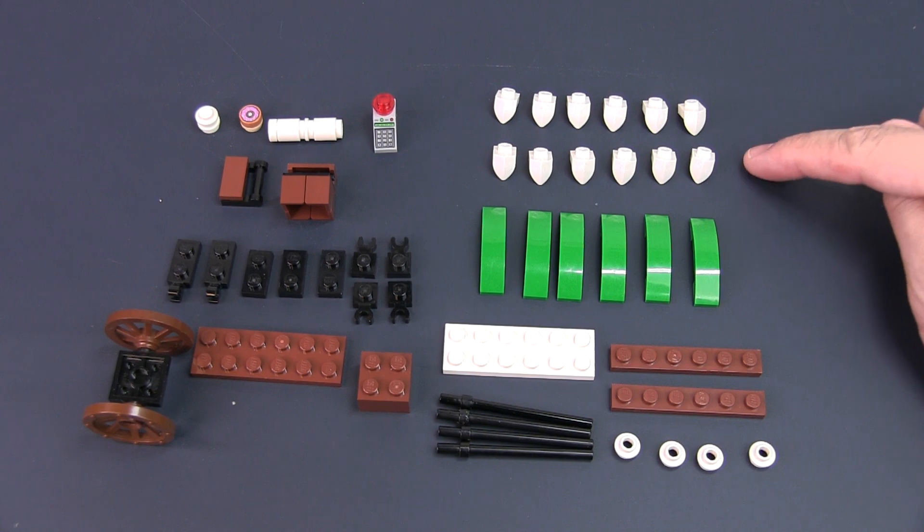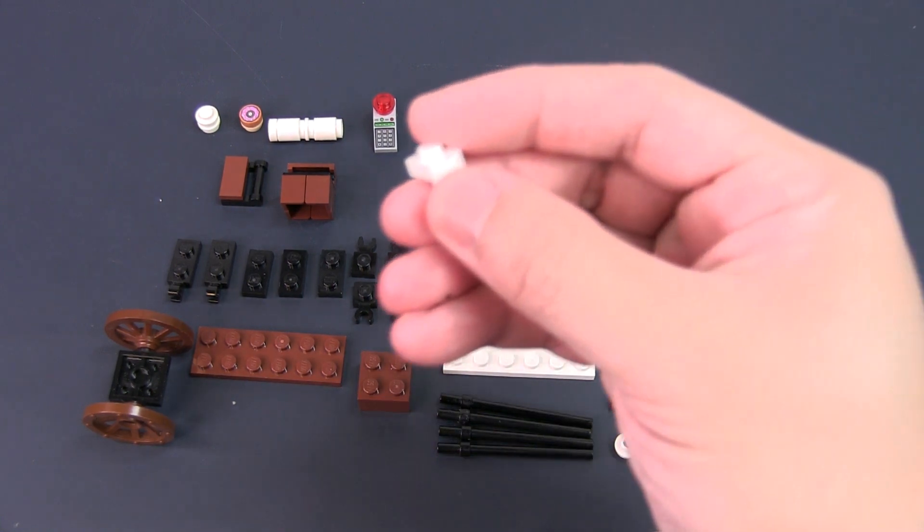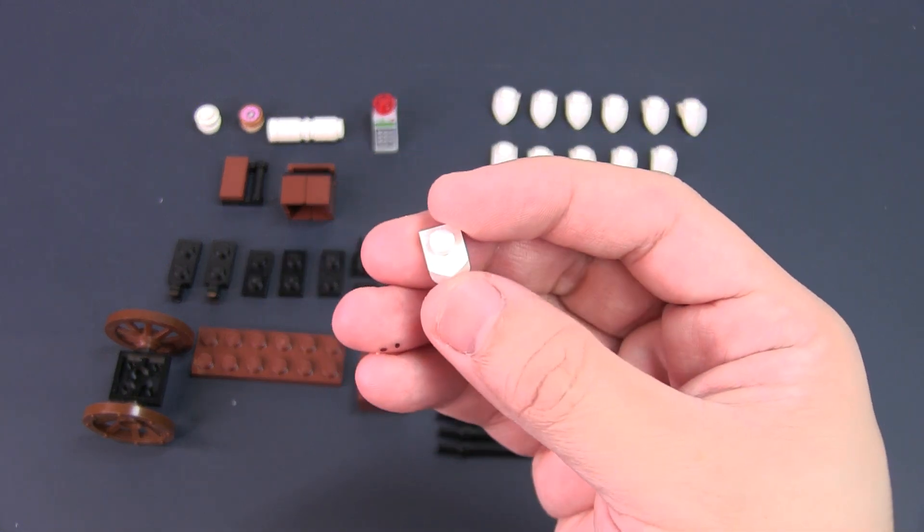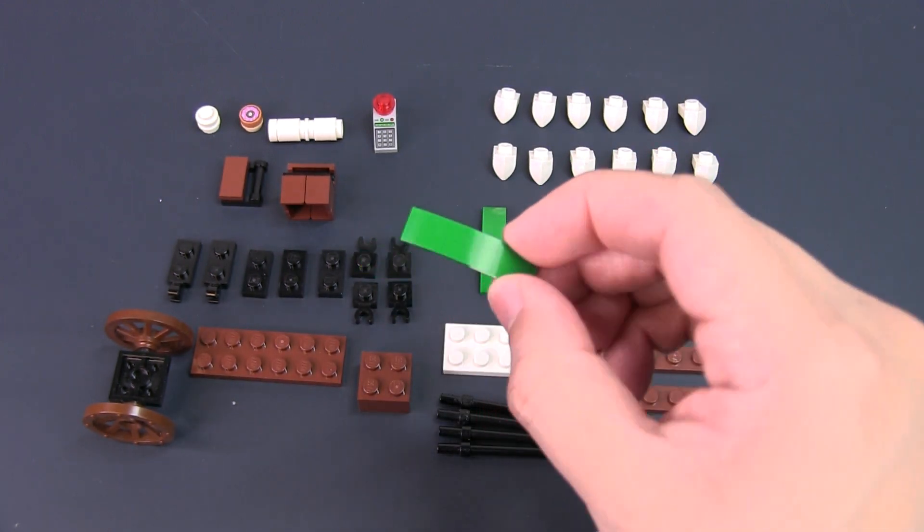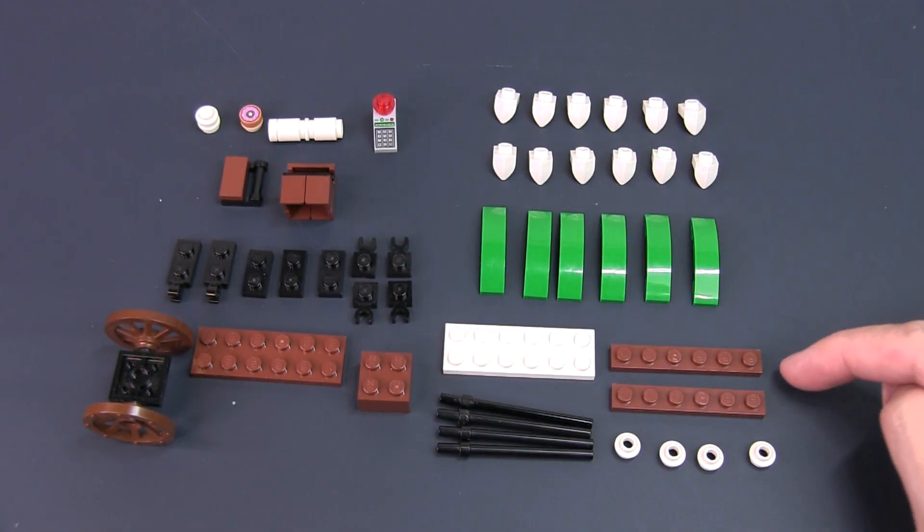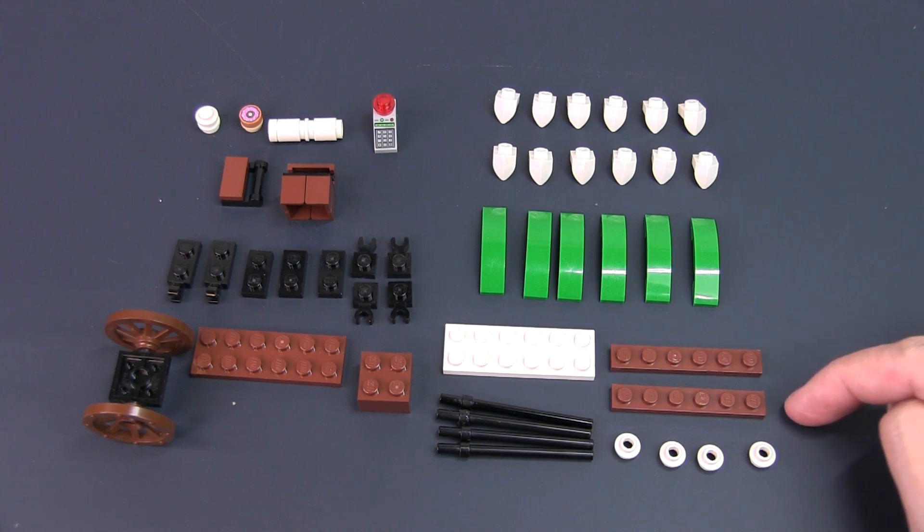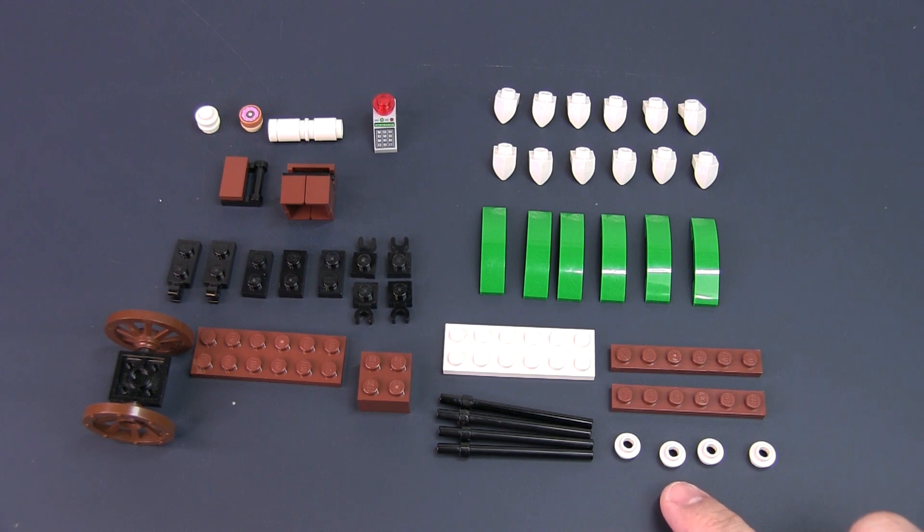For the roof you need 12 pieces of these modified plates with teeth components, 6 1x4 curved tiles, 2 1x6 plates, 4 round studs with holes in the center, a 2x6 white plate, and 4 6-stud long bar elements.